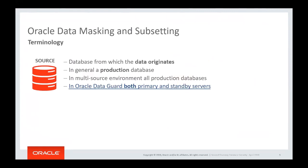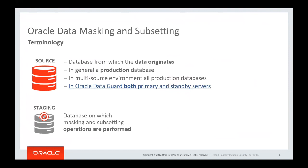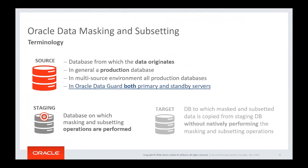A quick terminology reminder: the source is the database from which data originates — generally production. In a multi-source environment such as Data Guard, you must consider both primary and standby. The staging database is where masking and subsetting operations are performed. The target is where data is copied from staging without natively performing operations.